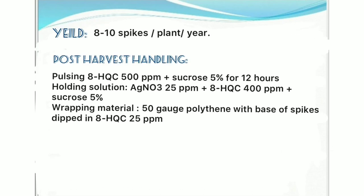Yield: 8–10 spikes per plant per year. Post-harvest handling: Pulsing — 8HQC 500 ppm plus sucrose 5% for 12 hours. Holding solution — Silver nitrate 25 ppm plus 8HQC 400 ppm plus sucrose 5%. Wrapping material — 50 gauge polythene with base of spikes dipped in 8HQC 25 ppm.